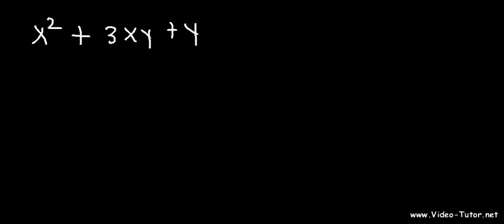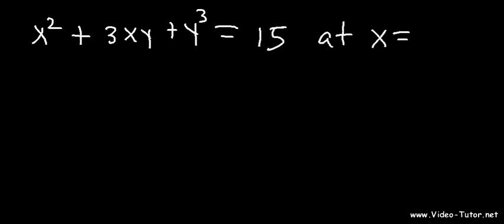Now let's say if you get a problem that looks like this: x squared plus 3xy plus y to the third is equal to 15, and you want to find the equation of the tangent line at x equals 1. The steps are the same — we need to find the value of y by plugging in 1 for x and solving for y. Then we find the first derivative and plug in x and y, then write the equation of the tangent line. The concept is the same; it's just the problem is a little bit harder.